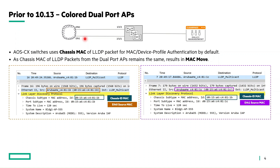Consider a packet capture example from a dual port AP of type 555. The LLDP captured from the E0 interface shows the source MAC address is the E0 interface MAC, and the chassis MAC is also E0's MAC address. For the E1 LLDP packet capture, the source MAC is the E1 interface MAC address, but the chassis MAC is still E0's MAC address. So the chassis MAC remains the same whether LLDP packets come from E0 or E1, and since we use only the chassis MAC for authentication, this results in a MAC move.